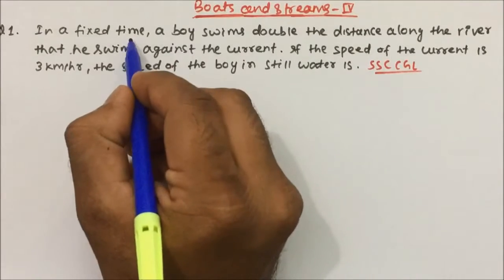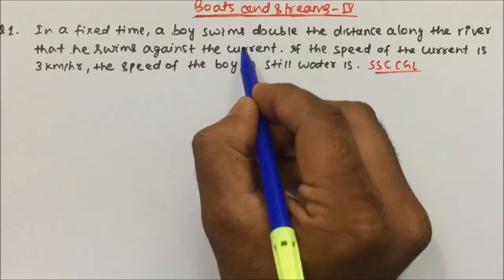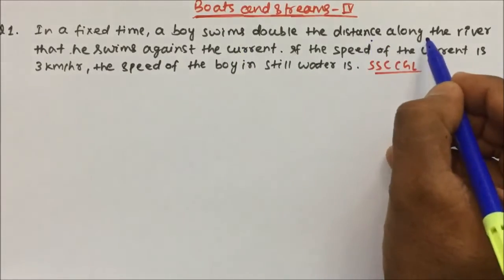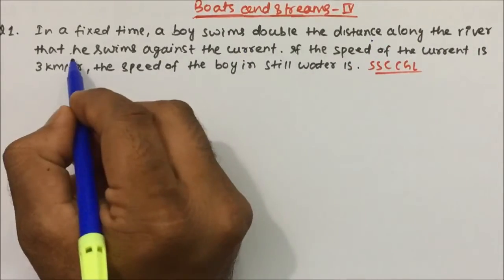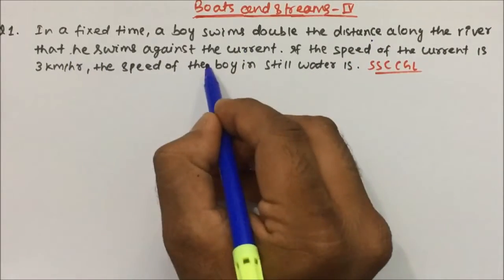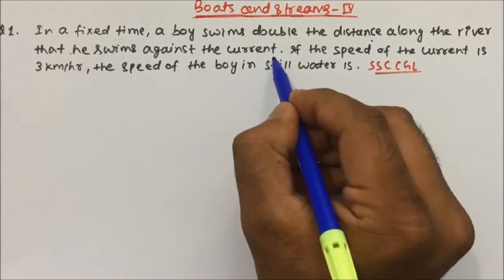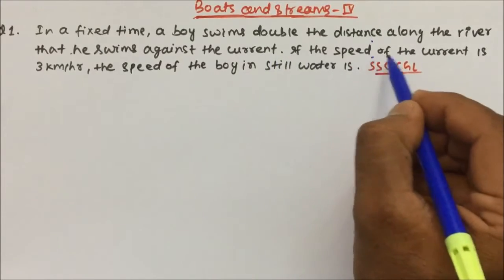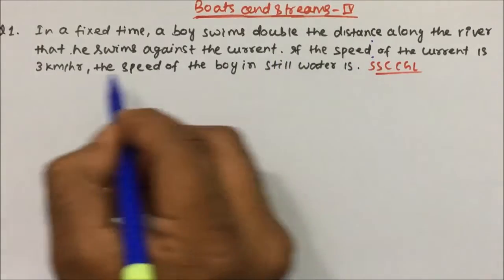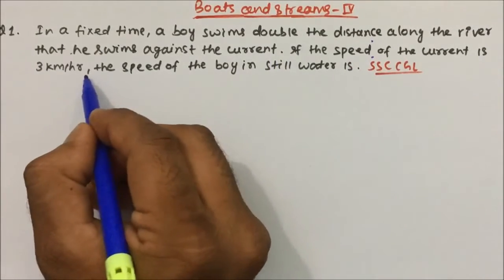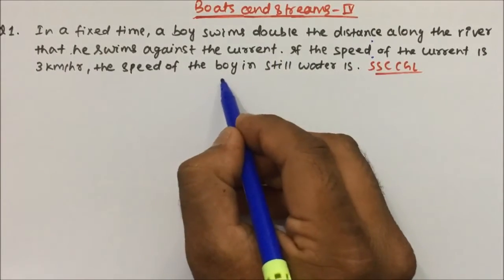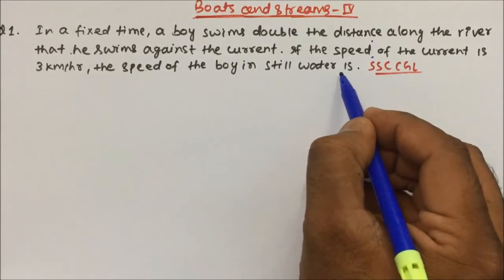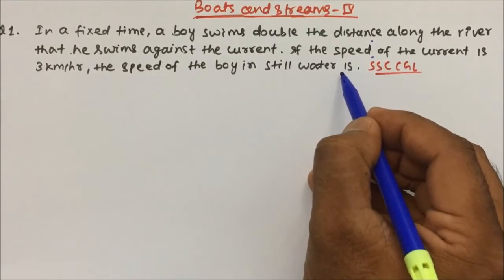Question 1: In a fixed time, a boy swims double the distance along the river compared to what he swims against the current. If the speed of the current is 3 km per hour, find the speed of the boy in still water.